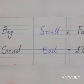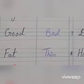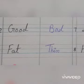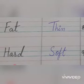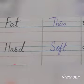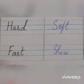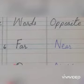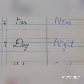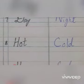Number three: fat (mota) — thin (patla). Number four: hard (sakht) — soft. Number five: fast — slow (ahista). Number six: far (door) — near (curry). Number seven: day — night (raat).